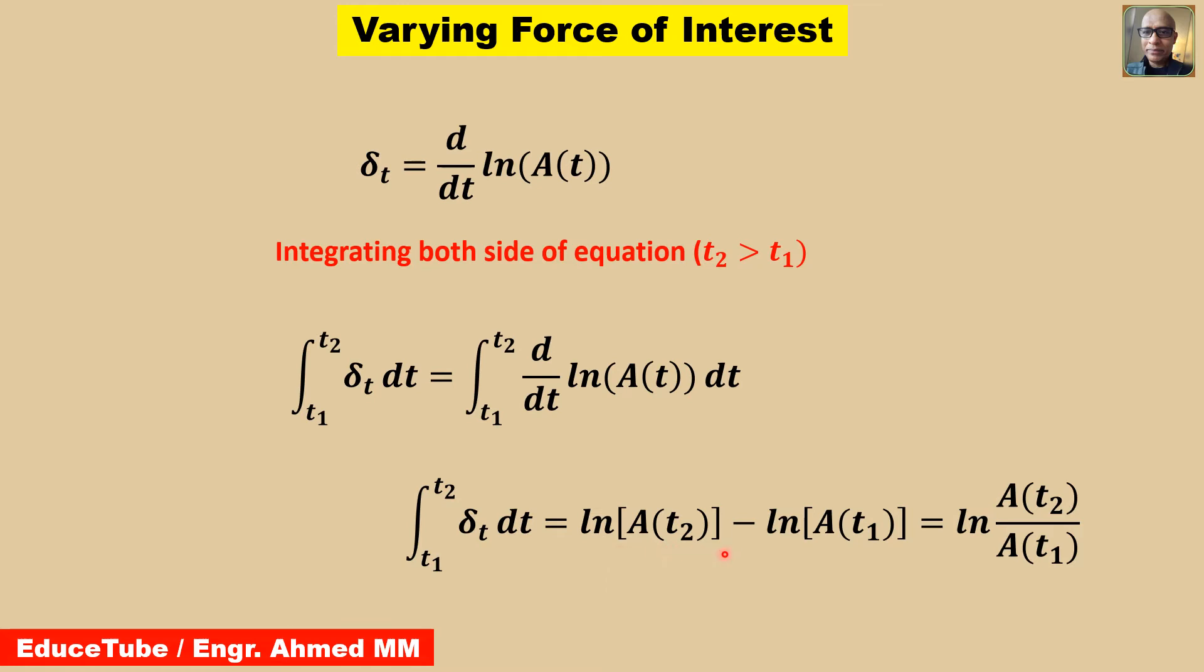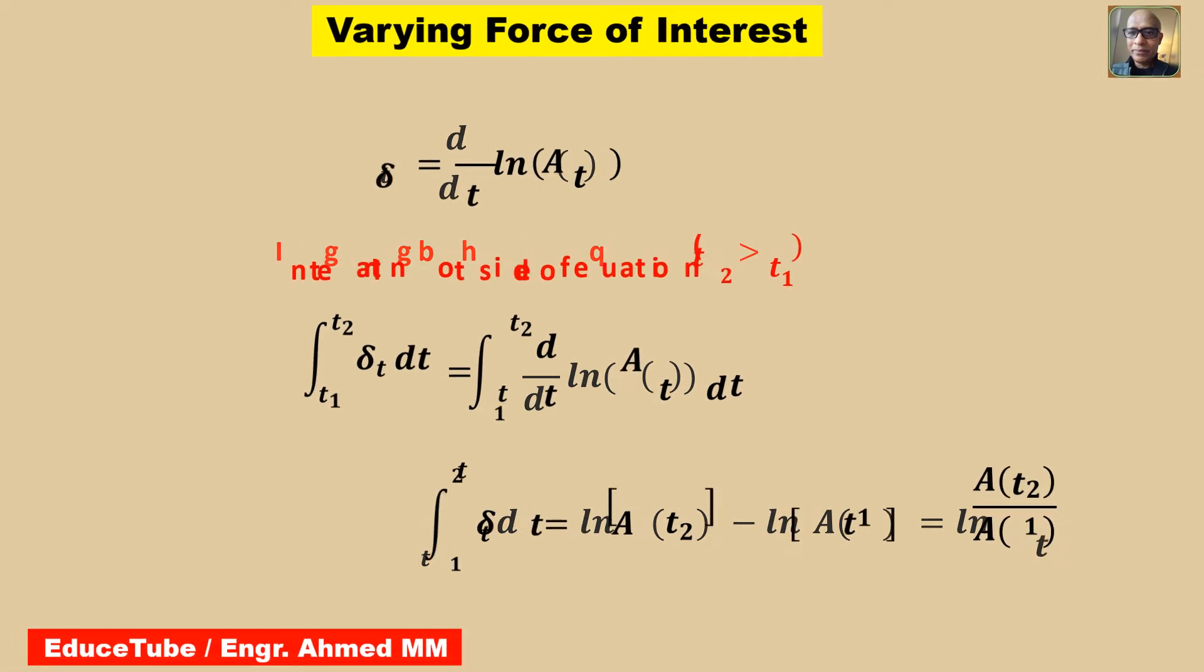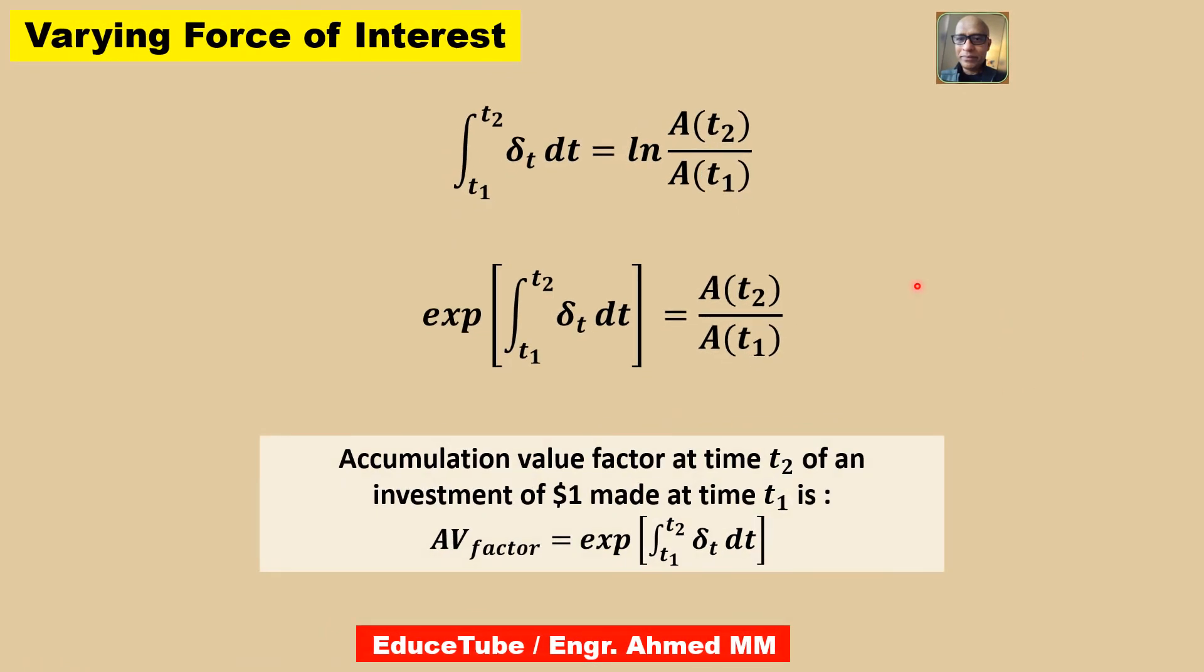And this ln, this term, this term having minus, so surely we can write as this in dividing form: ln(A(t2)/A(t1)). Now this is equal to ln this. In exponential term, we can write it as ln of this equal to this. So surely we can write exponential of this equal to only this part.